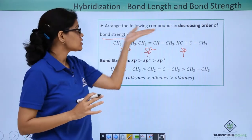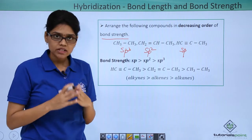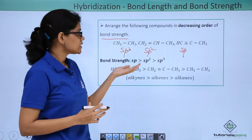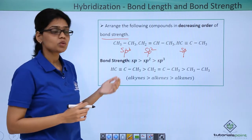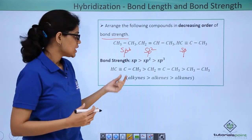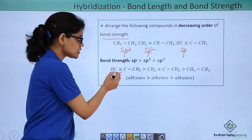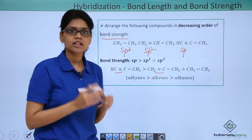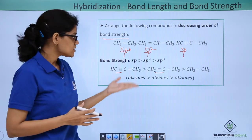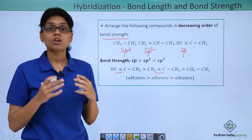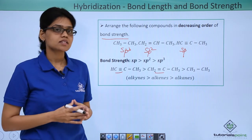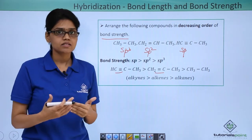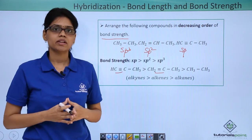We are asked to find the decreasing order of bond strength. We know the bond strength order is sp > sp2 > sp3. So you simply arrange the compounds in the same order: alkyne (C≡C) > alkene (C=C) > alkane (C-C). This is how you can use bond strength and bond length to understand the reactivity of various compounds. More details will be covered in upcoming topics.